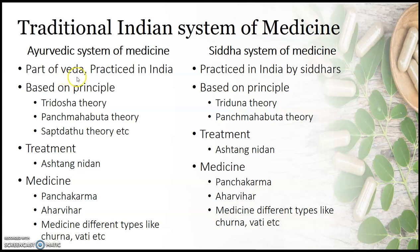Ayurvedic system of medicine is considered a part of the Vedas — specifically Upaveda or Atharvaveda — and is highly practiced in the northern part of India. It is based upon principles like the Tridosha theory (Vata-Pitta), Panchamahabhuta theory, and Sapta Dhatu theory. Diagnosis and treatment are carried out based on Ashtanga Nidana — eight characteristics observed to find disease conditions. Treatment involves Panchakarma (purification of the body), dietary restrictions (Ahar-Bihar), and medicines prescribed in various forms like Churna, Vati, and Gutika.